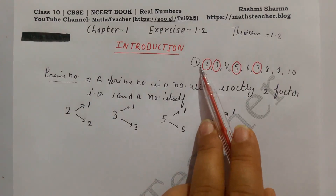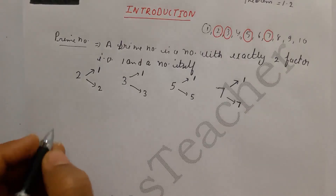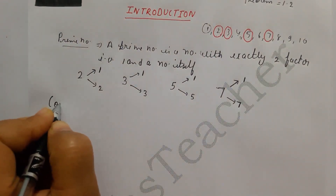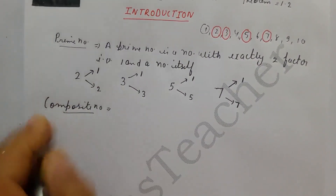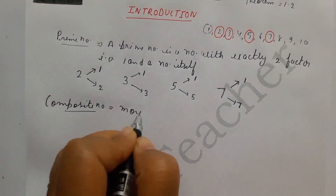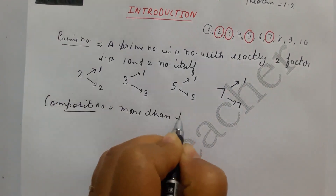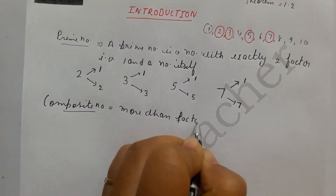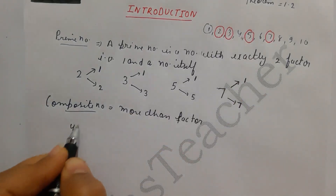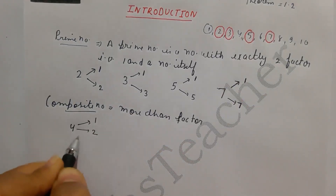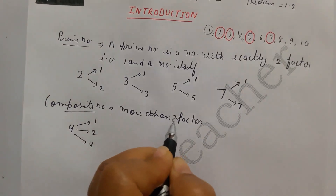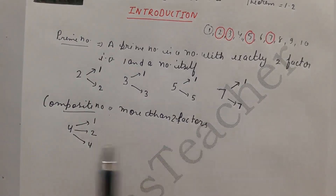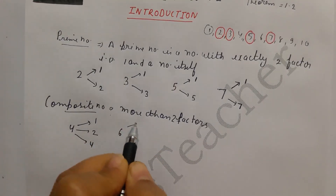Now let's see what a composite number is. A composite number is a number with more than 2 factors. For example, 4 is in the 1-table, the 2-table, and the 4-table — so it has more than 2 factors, making it a composite number.